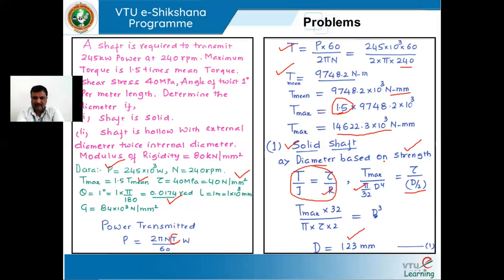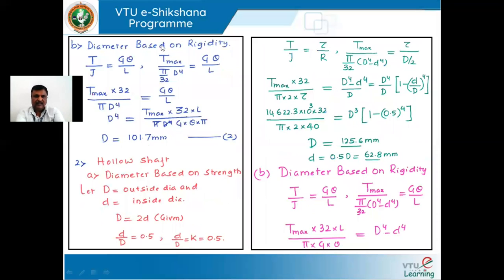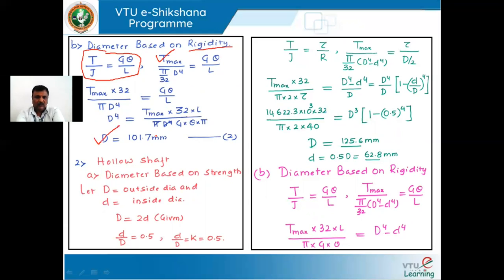Similarly, for the solid shaft based on rigidity as the criterion, we use the second part of the torsion equation: T/J = Gθ/L, where G is the modulus of rigidity, θ is the angle of twist, and L is the shaft length. Using J = πd⁴/32 and substituting the values of G, θ in radians, and length, we get the diameter as 1.7 mm. We adopt the larger of the two values as the diameter of the solid shaft.